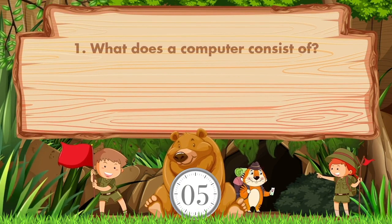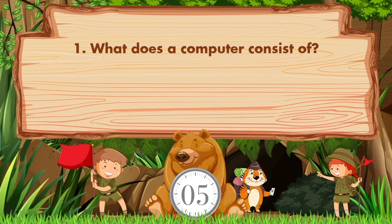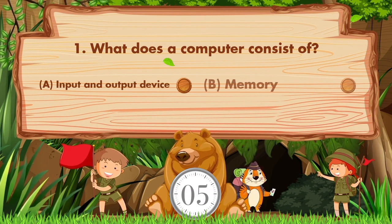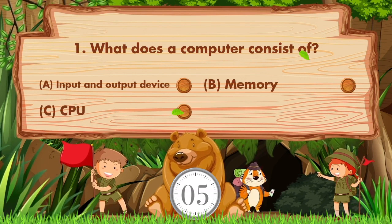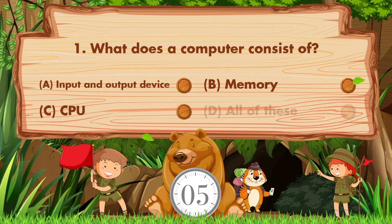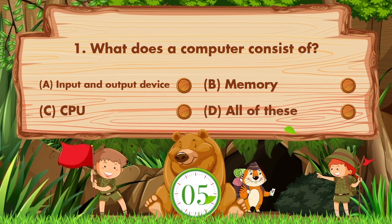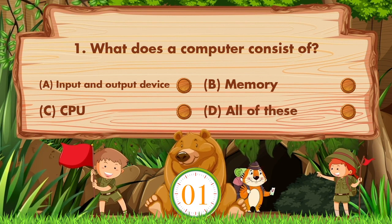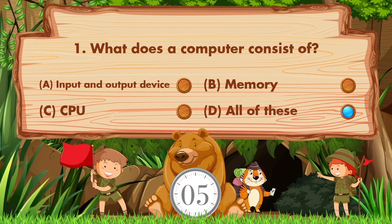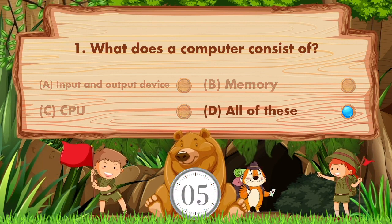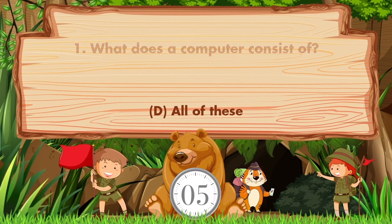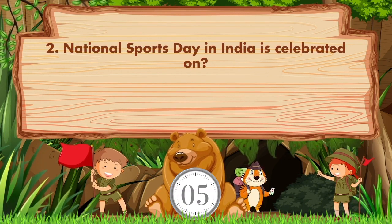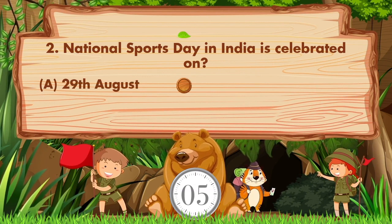What does a computer consist of? Option A is input and output device, B is memory, C is CPU, D is all of these. The answer is option D, all of these.